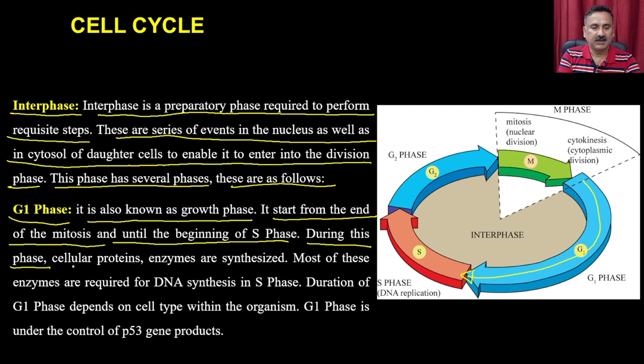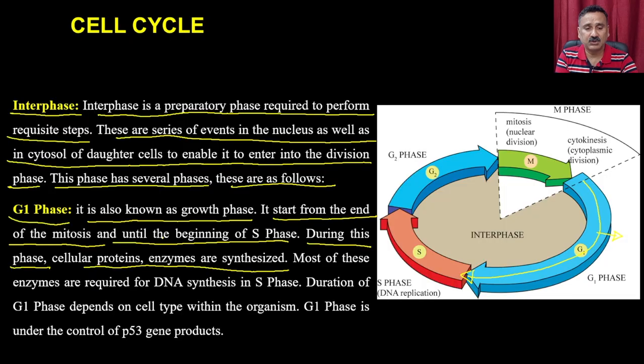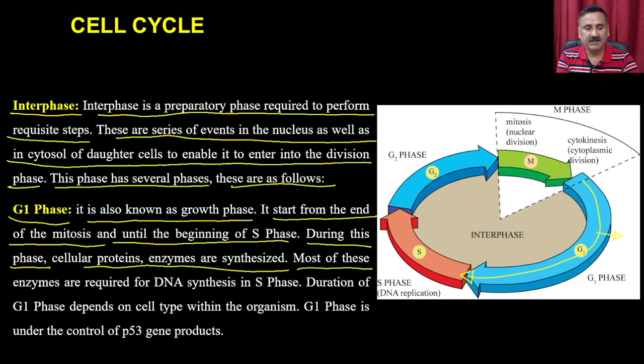During the G1 phase, cellular proteins and enzymes are synthesized. You require DNA polymerase, actin protein, plasma membrane components — all of these are synthesized within the G1 phase. There will be a synthesis of cytosol content to help the cell enter the S phase. Most of these enzymes are required for DNA synthesis in the S phase.